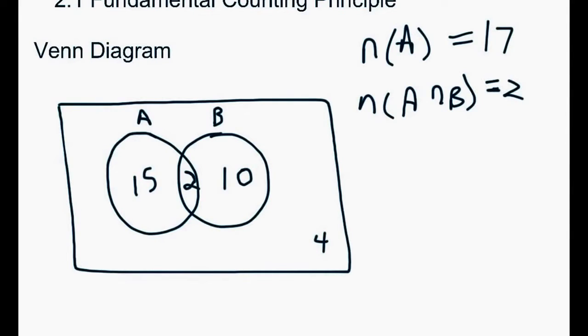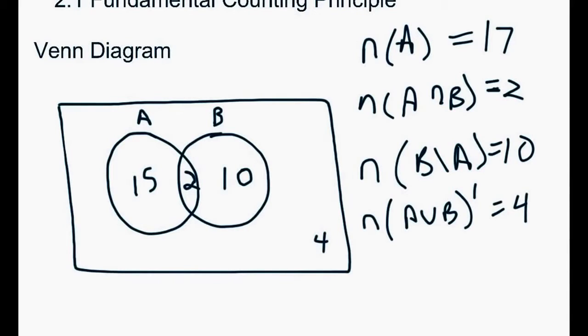Or if I said how many combinations would be B without A, that would be 10. Or if we said how many are A or B complement, that would be everything except for A and B circles. So in this case, it would be 4. A Venn diagram, basically what we're doing is figuring out how many different combinations and arrangements we're talking about.